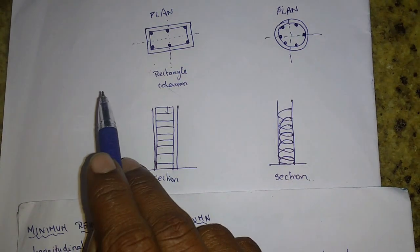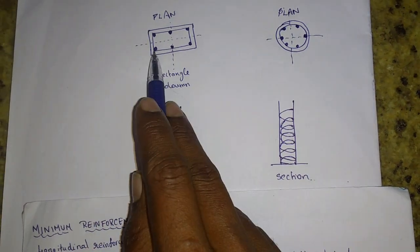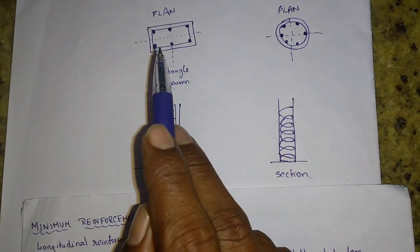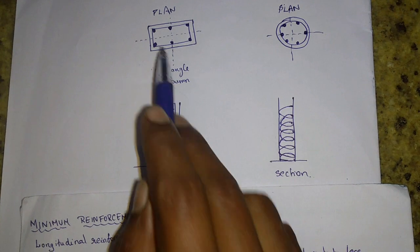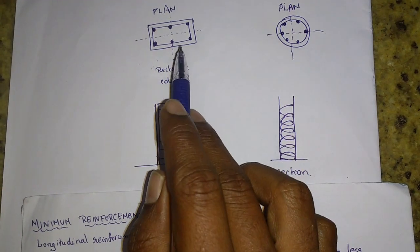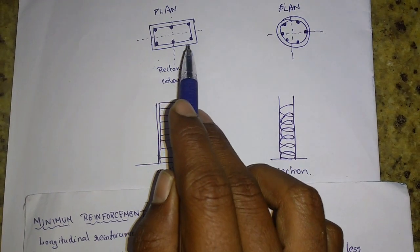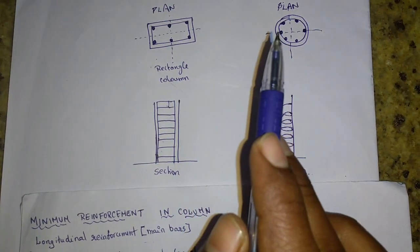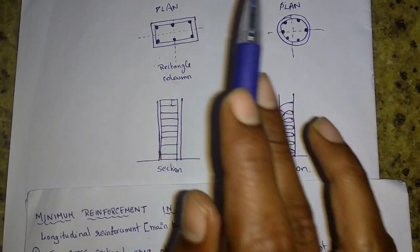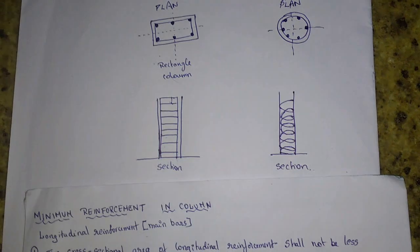So the main bars should be in between 0.8% to 6% of the gross cross-sectional area.